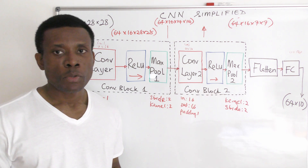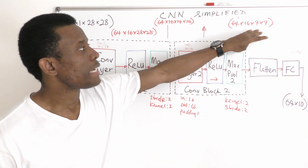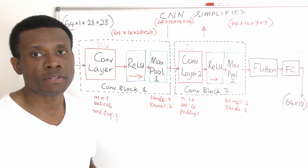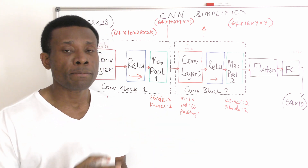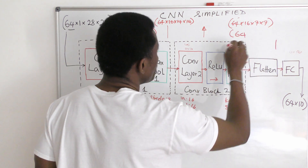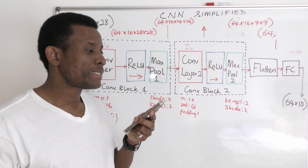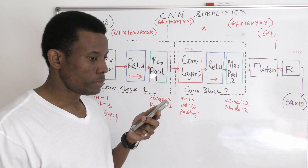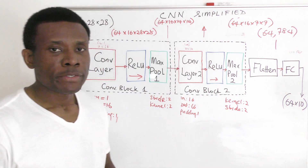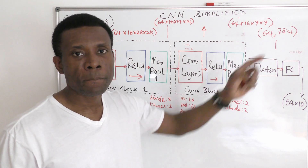Let's now go to the flatten layer. The flatten layer takes the input of dimensions 16 by 7 by 7 and converts it into a one-dimensional vector by simply multiplying everything across. So we get 64 by 16 times 7 times 7. 16 times 7 times 7 equals 784. The flatten layer flattens from 64 by 16 by 7 by 7 to 64 by 784.